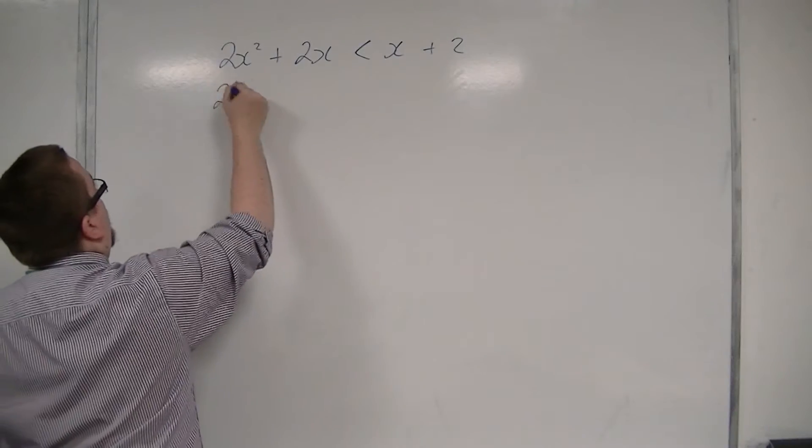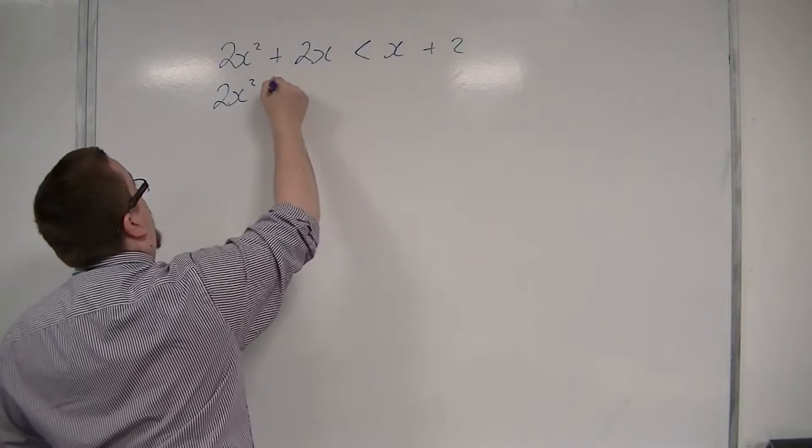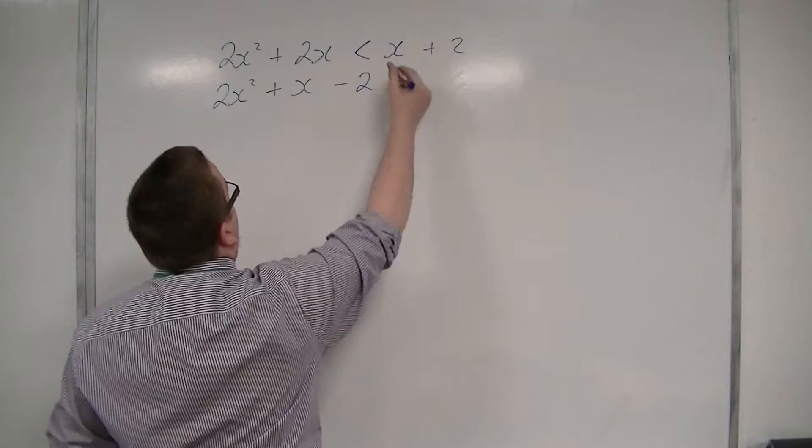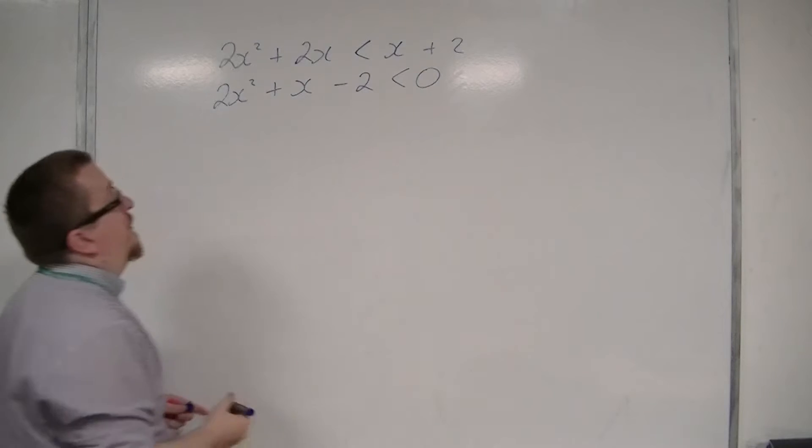I'm going to take x + 2 from both sides. So I have 2x², I take x from both sides so I'm left with x, and I take 2 from both sides so I've got minus 2. That's now less than 0.